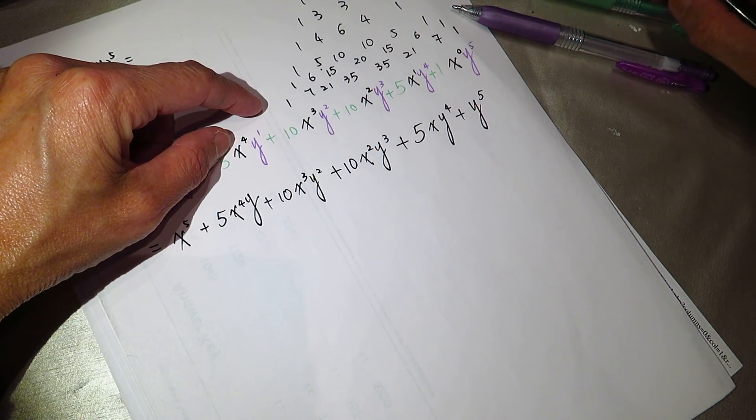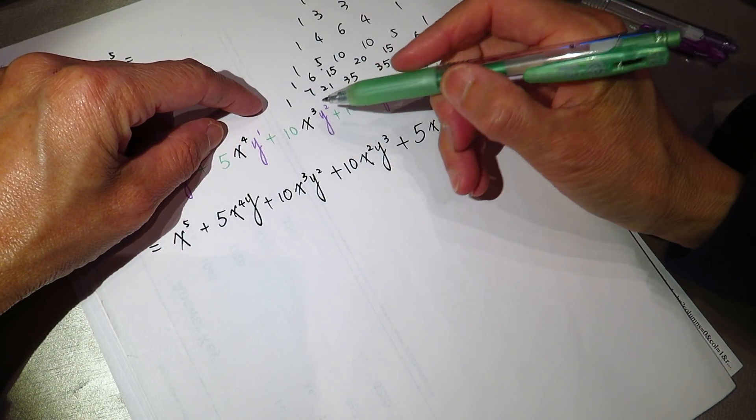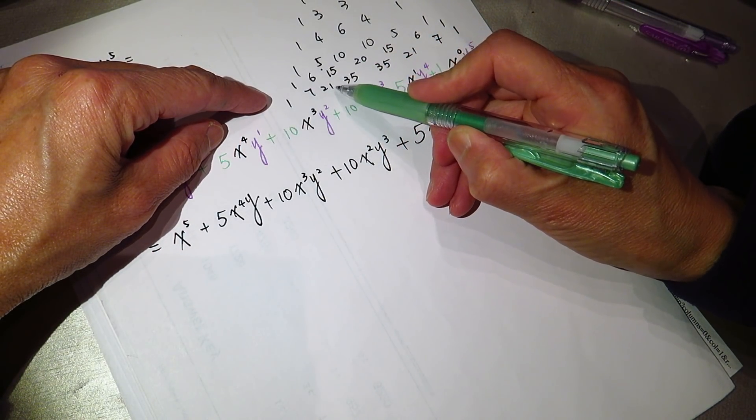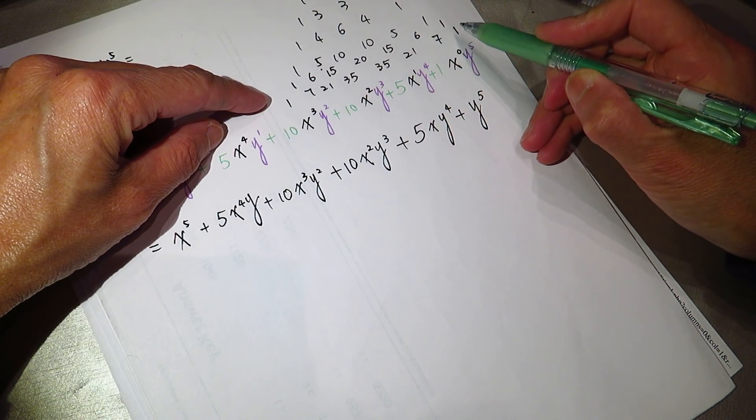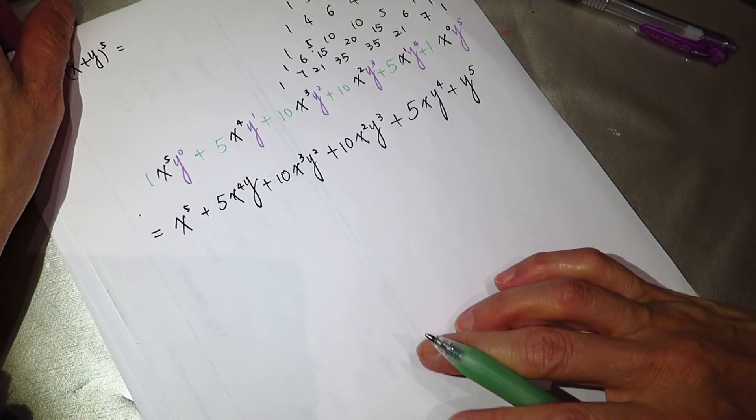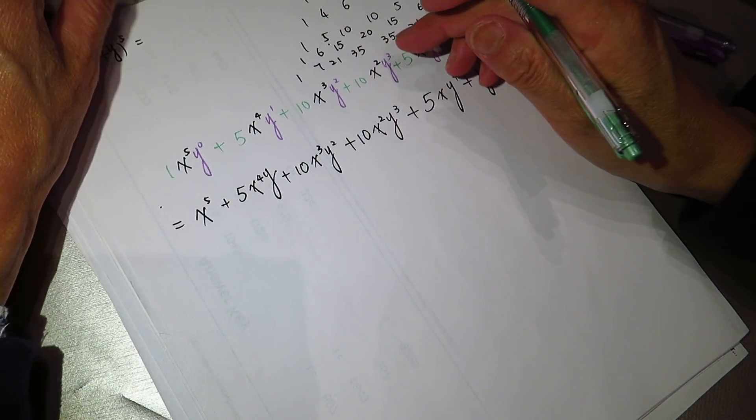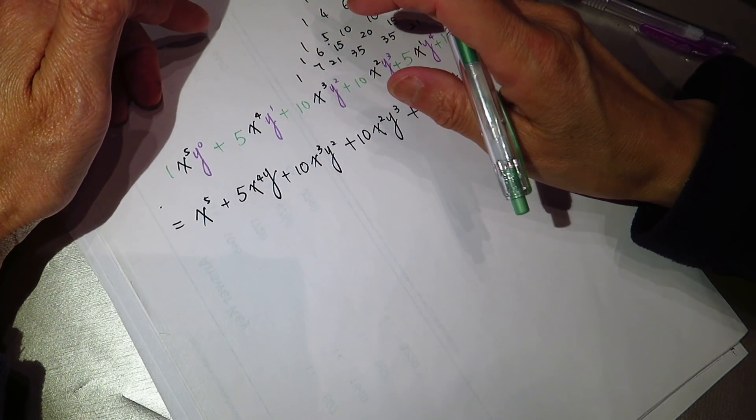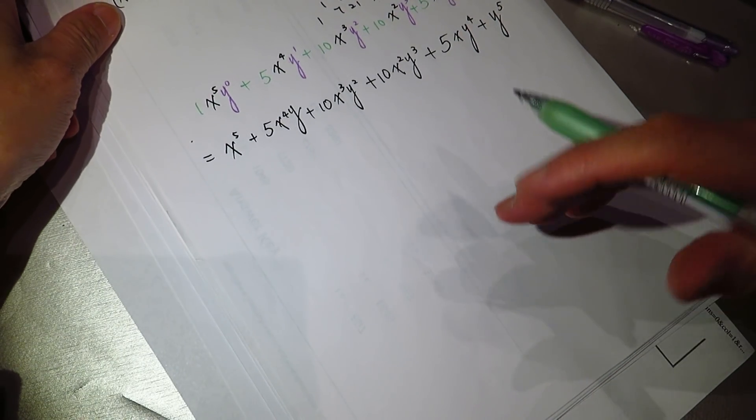Now, let's count the terms. How many terms we have? One, two, three, four, five, six, seven, eight. And it's to the power of seven. So, eight terms to the power of seven. It's perfect.